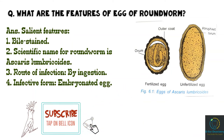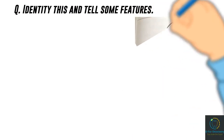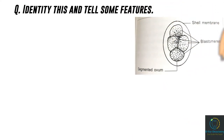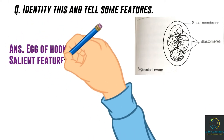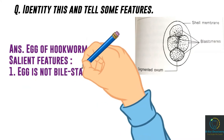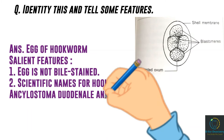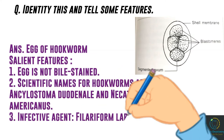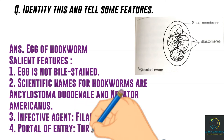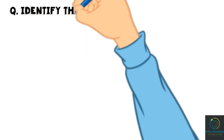Identify this and tell some features. Salient features: The egg is not bile-stained. Scientific names for hookworm are Ancylostoma duodenale and Necator americanus. Filariform larva is the infective agent and the portal of entry is through the skin.